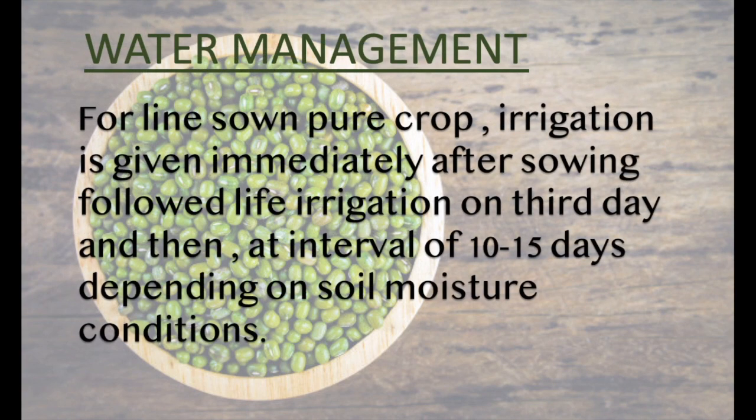Water management: For light-sown pure crop, irrigation is given immediately after sowing, followed by life irrigation on the third day, and then at intervals of 13–15 days depending on soil moisture conditions.